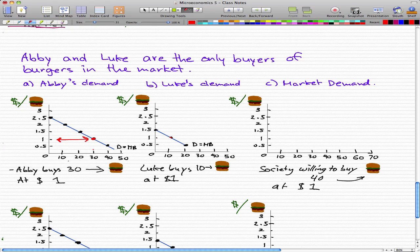So Abby will buy 30 burgers at a dollar. Now for Luke, Luke is willing to pay a dollar for the 10th burger that he will buy, and that is represented by that point here.